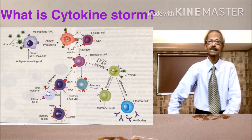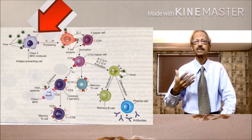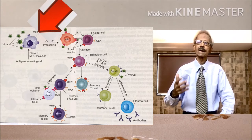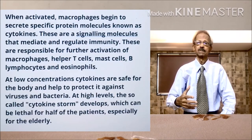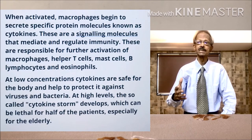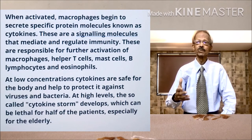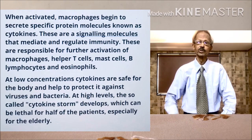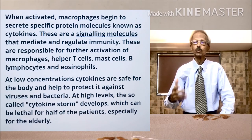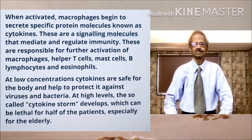Now let us discuss the biochemical events of the cytokine storm. Macrophages get activated by increased ferritin concentration as the viral infection spreads in the lungs. When activated, macrophages begin to secrete specific protein molecules known as cytokines. These are signaling molecules that mediate and regulate immunity, and are responsible for further activation of macrophages, helper T cells, mast cells, B lymphocytes, and eosinophils. At low concentrations, cytokines are safe for the body and help to protect it against viruses and bacteria.